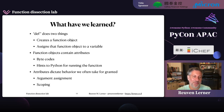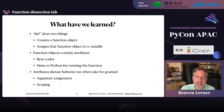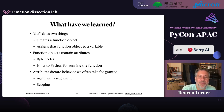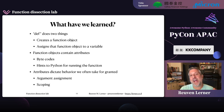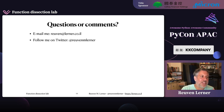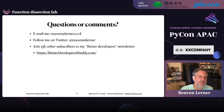What have we learned? def does two things: it creates a function object, and it assigns that function object to a variable. Function objects contain attributes — bytecodes and hints to Python — and those attributes dictate behavior we often take for granted: argument assignment, scoping, inner functions, and so forth. I hope you enjoyed this talk. If you have any questions, email me, find me on Twitter, or join about 25,000 other people on my free weekly mailing list, Better Developers.